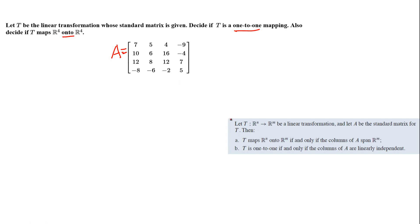We are going to use this theorem. When we have a linear transformation T and A being its standard matrix, T is one-to-one if and only if the columns of A are linearly independent. We have four rows and four columns here.